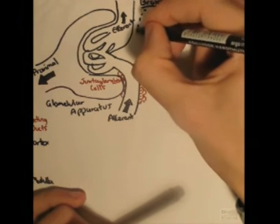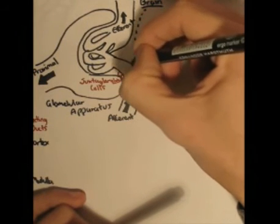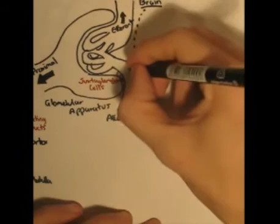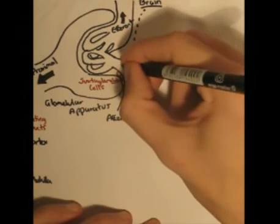So for example, when the brain detects low blood pressure, it sends signals to these juxtaglomerular cells to secrete renin. And renin, I will depict as R with a circle.